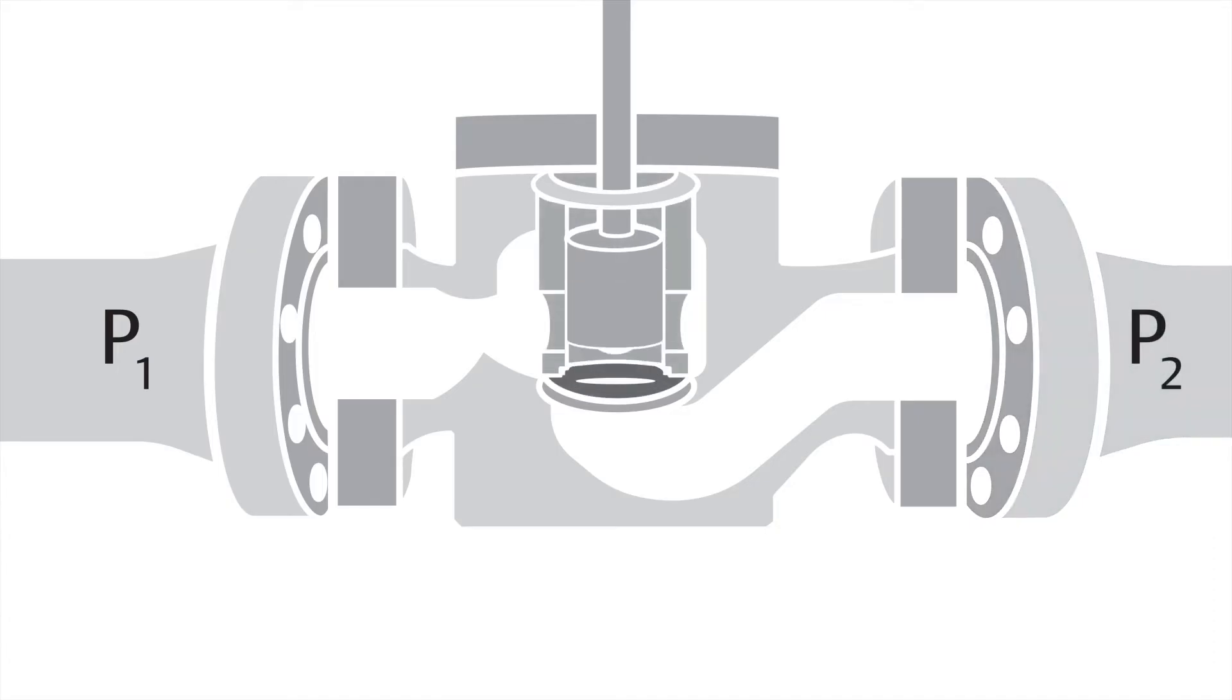And just like a door, it can open and close and have different positions in between. In order for this pressure reduction to occur, there has to be a flowing medium that travels through the control valve.